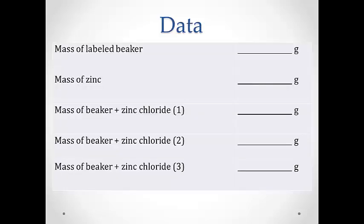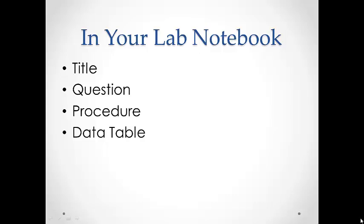The data for this lab is pretty straightforward: you need to know the mass of your labeled beaker, the mass of your zinc, and then on the second day you will need to know the mass of the beaker plus your dried zinc chloride for a couple of heatings. Before being able to do the lab, you will need to have in your lab notebook the title of the lab, the question for the lab, a brief description of your procedure, and your data table set up and ready to go.